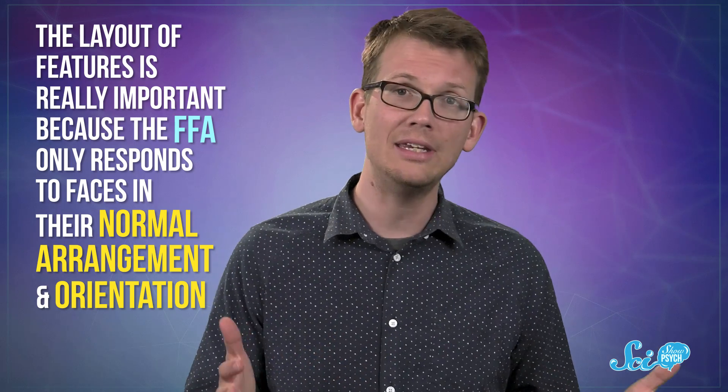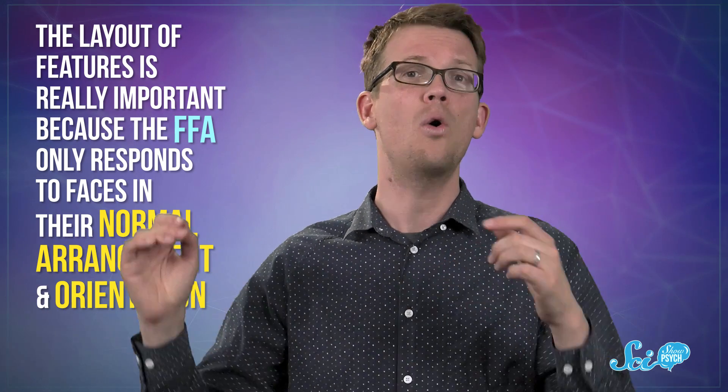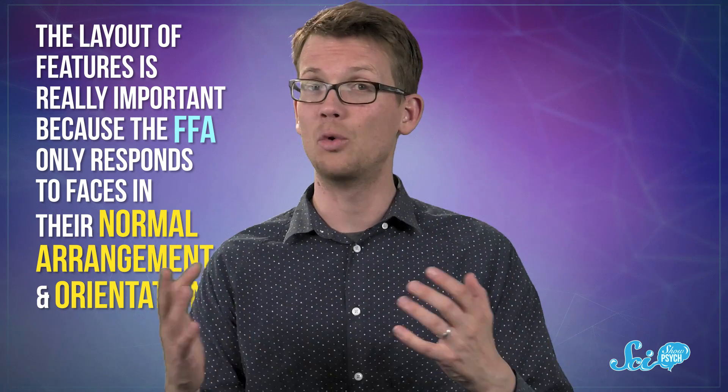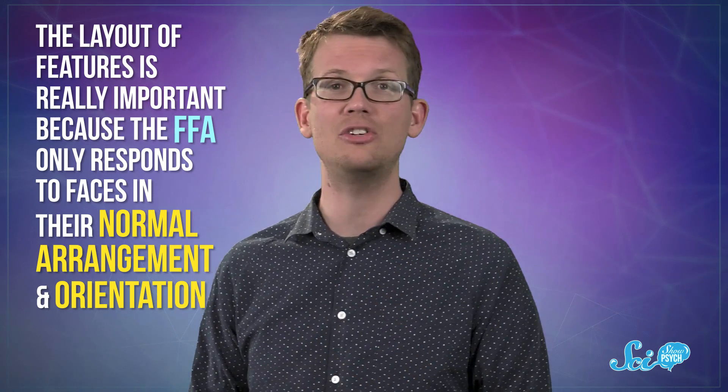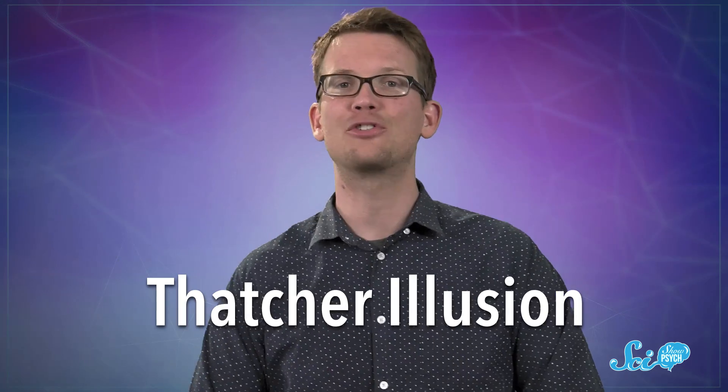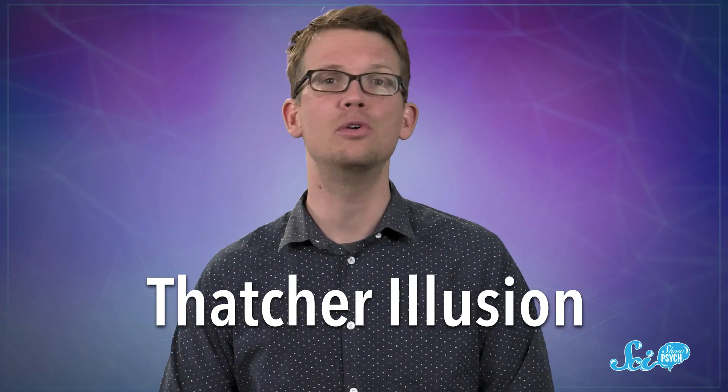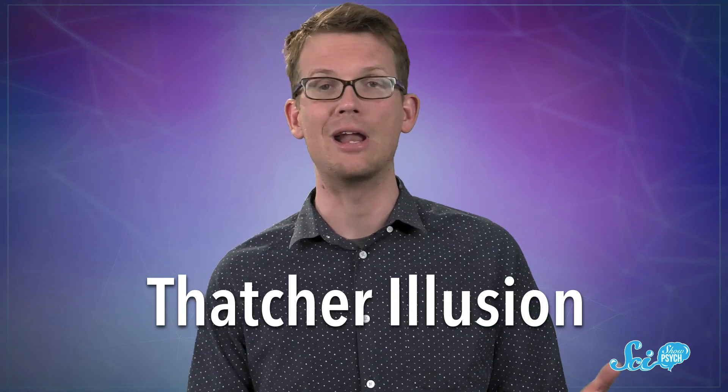The layout of features is really important because the FFA only responds to faces in their normal arrangement and orientation. When one is upside down, you might know it's a face, but your brain doesn't treat it like one. Take the Thatcher illusion, named after Margaret Thatcher, whose face was originally used to demonstrate this phenomenon.